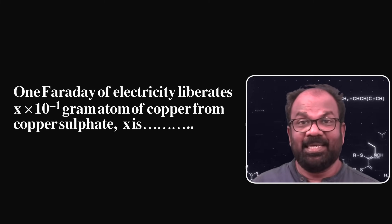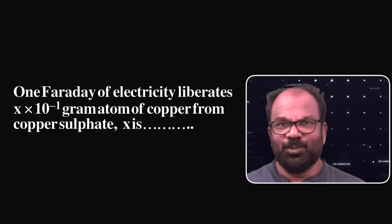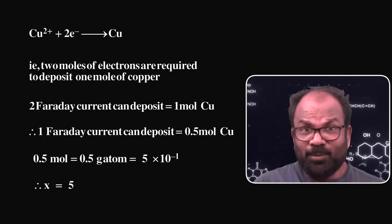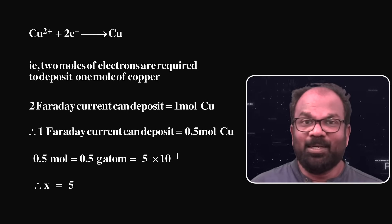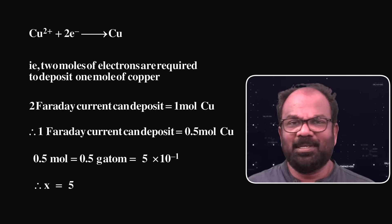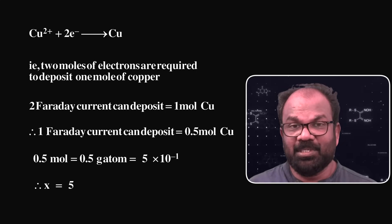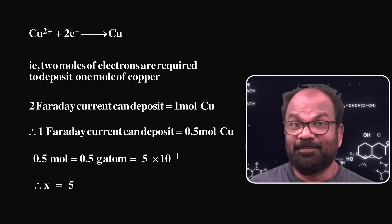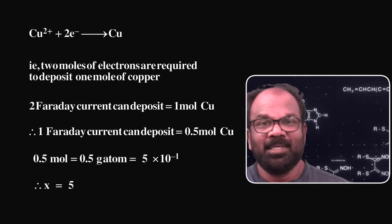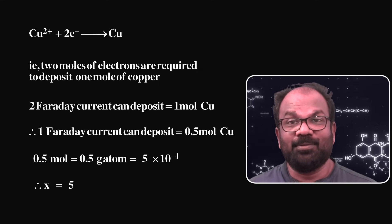Question number 11: 1 Faraday of electricity liberates x × 10⁻¹ gram atoms of copper from a copper sulfate solution. For the deposition of 1 mol of copper, 2 mols of electrons (2 Faraday) are required. So 1 Faraday deposits 0.5 mol = 0.5 gram atoms = 5 × 10⁻¹ gram atoms of copper. The value of x is 5.